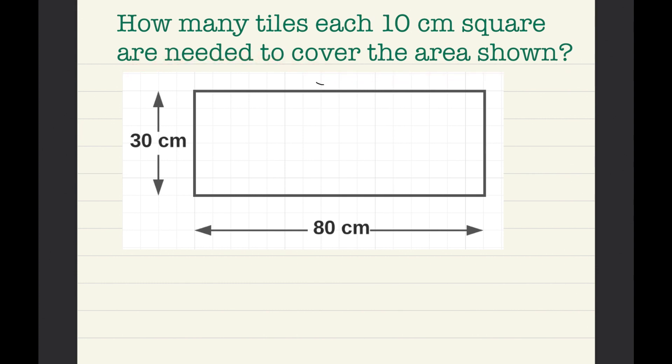So the area is 30cm times 80cm. Let's just change it. 30 times 80, that equals 2400cm squared.